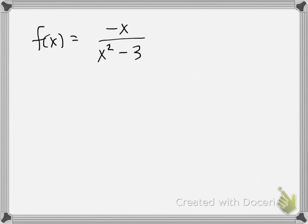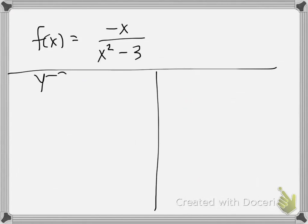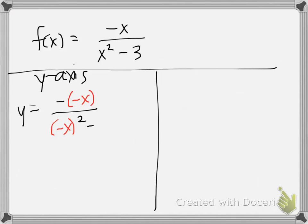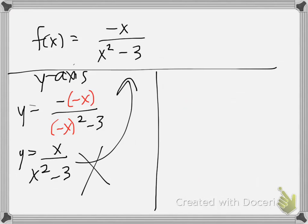Let's work through another example. First, let's test for y-axis symmetry by negating x. I plug in negative x and get negative negative x over negative x squared minus 3. In the numerator, the negatives cancel, giving x. In the denominator, we get x squared minus 3. Is this what we started with? No, because the numerator is not negative. So we don't have y-axis symmetry.